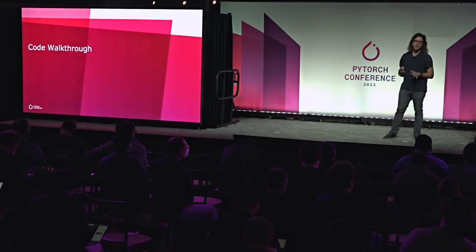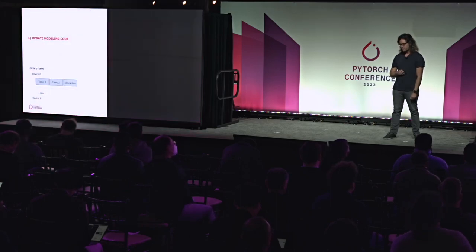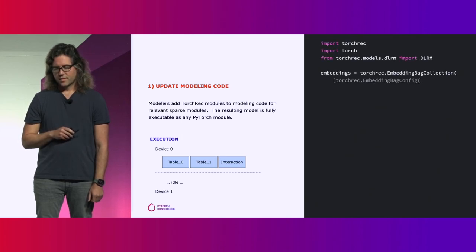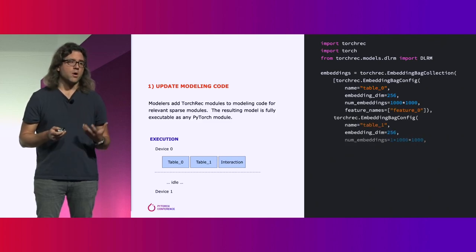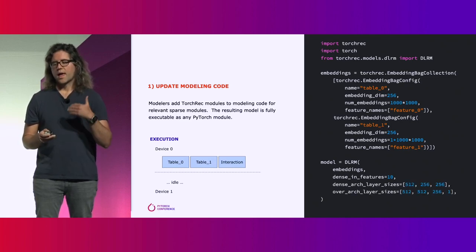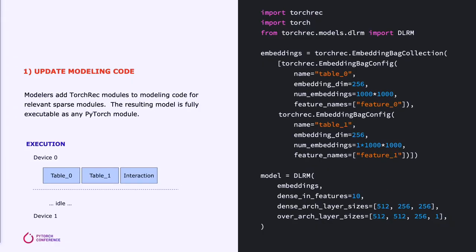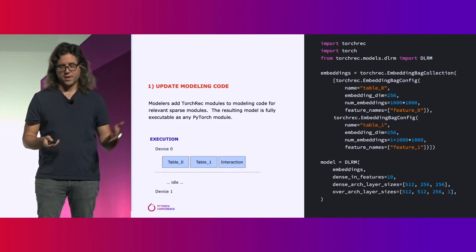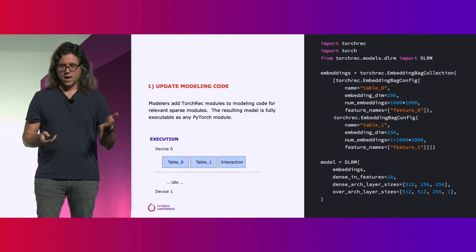Let's do a quick code walkthrough to show you just how easy it is to apply TorchRec to your models. At its core, what you need to do is make some light modeling changes. We need to swap out your standard PyTorch NN embedding bag implementation with our NN embedding bag collection, which is a specialized module we provide. Here you can see one configured with two embedding tables. We've also implemented a version of DLRM in the library for easy experimentation, where you can directly pass your embedding bag collection in. This output is fully functional, executing on a single device — the tables do lookups in serial, and then the rest of your model runs.